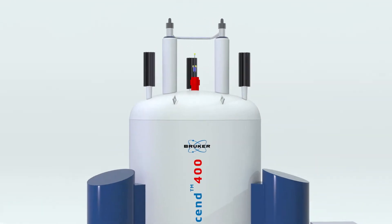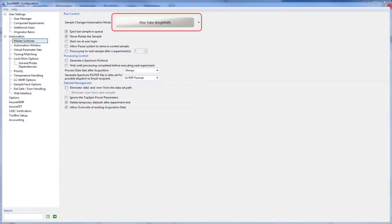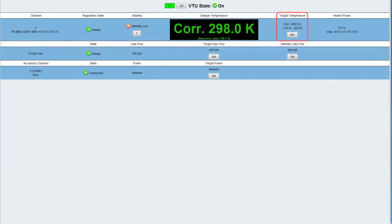Then remove the sample from the magnet, deactivate the sample changer if one is present, and set the sample changer automation mode to flow tube in the ICON NMR configuration screen. Set the desired spectrometer temperature and leave the gas flow at an appropriate value.